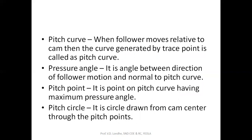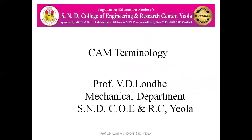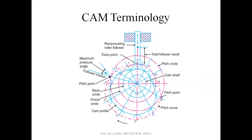The next definition is the pitch point. The pitch point is the point on the pitch curve having the maximum pressure angle, and that point is designated as the pitch point. The pitch circle is the circle drawn through this pitch point. This is the point where the pressure angle is maximum, and whatever circle we have drawn through it is nothing but the pitch circle.